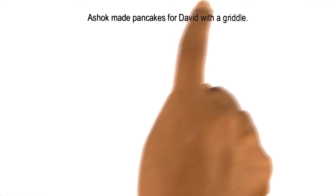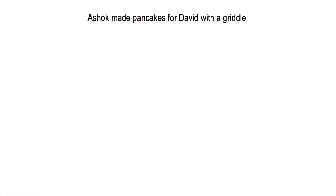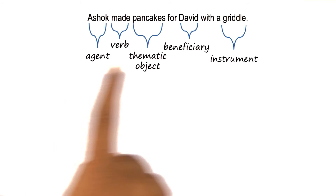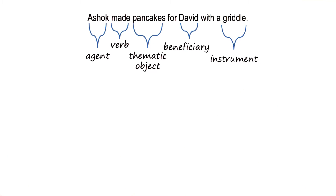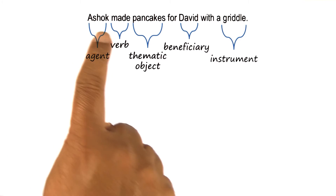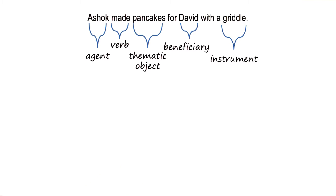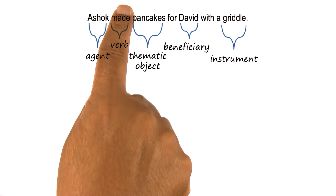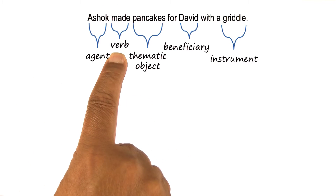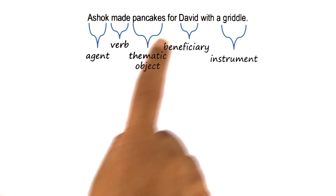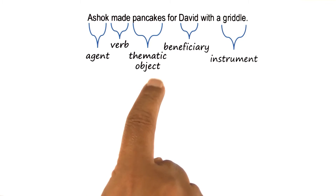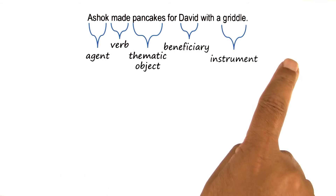The knowledge-based AI approach to understanding sentences like this puts semantic analysis at the forefront. Syntactic analysis and lexical analysis serve semantic analysis. So here are some of the semantic categories in terms of which we can classify the different words in the sentence. Ashok is an agent, made is an action or verb in a lexical sense, pancakes are the thematic object — the things that are getting made — and so on.